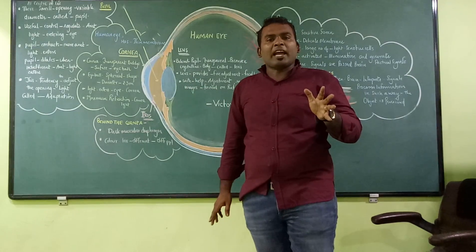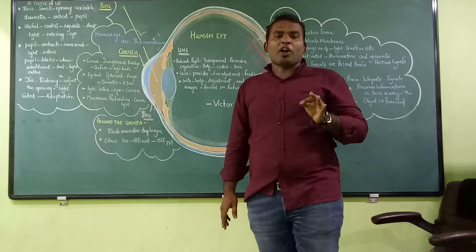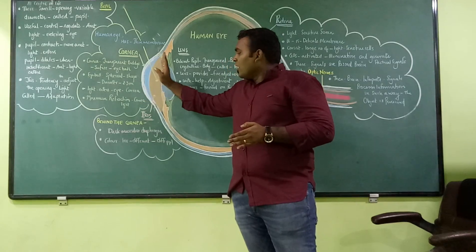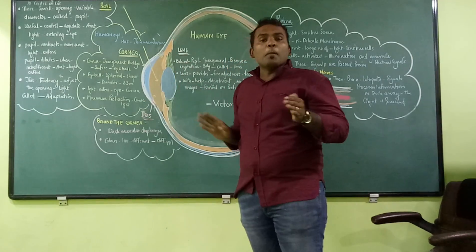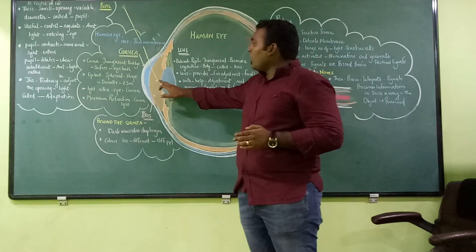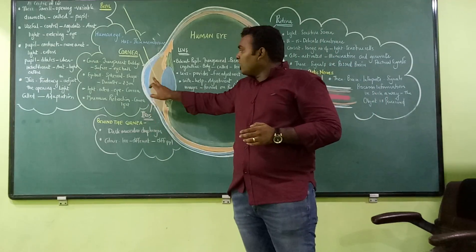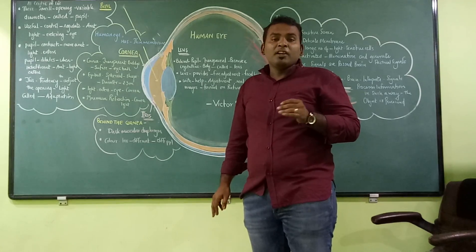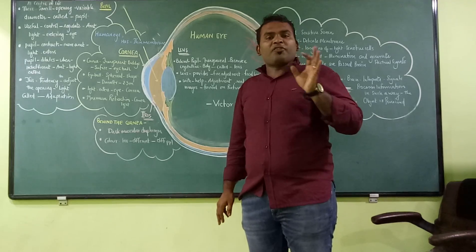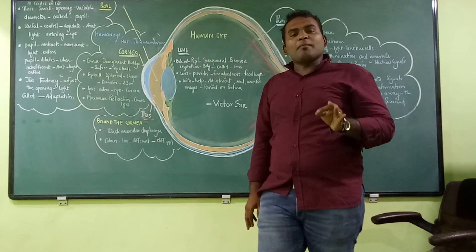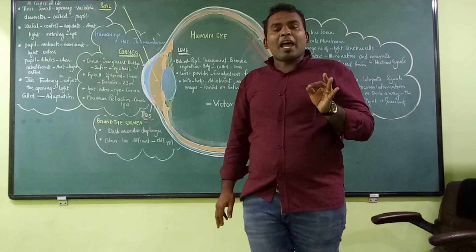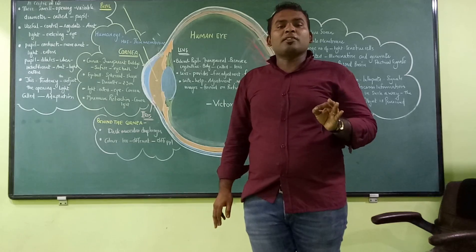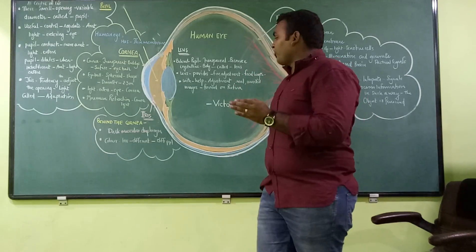Maximum refraction of the light takes place at the cornea. Behind the cornea, you have a dark muscular diaphragm which is called the iris. The color of the iris is different for different people — some people have black, some have blue, and some have a light green color iris.